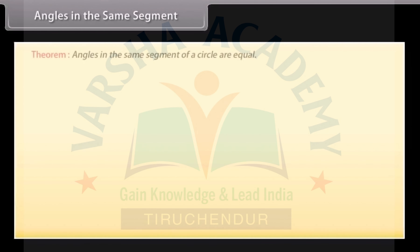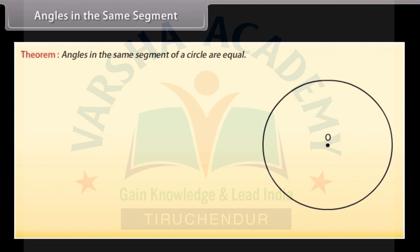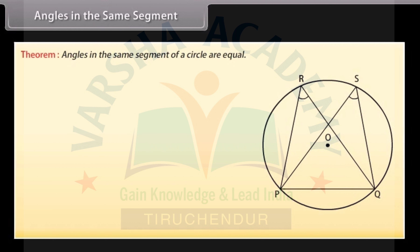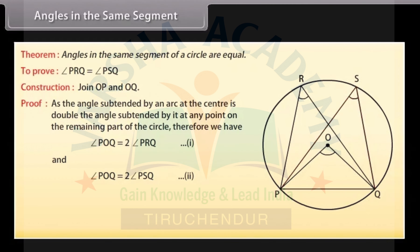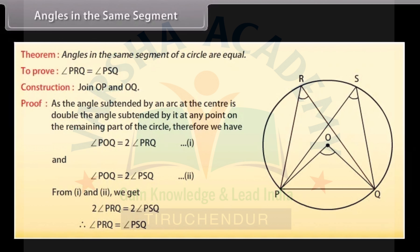Angles in the same segment. Theorem: angles in the same segment of a circle are equal. Given a circle with center O, angles PRQ and PSQ lie in the same segment formed by chord PQ. To prove: angle PRQ equals angle PSQ. Construction: join OP and OQ. Since the angle subtended by an arc at the center is double the angle at any point on the remaining circle, angle POQ equals 2 angle PRQ (equation 1) and angle POQ equals 2 angle PSQ (equation 2). From 1 and 2: 2 angle PRQ equals 2 angle PSQ, therefore angle PRQ equals angle PSQ.